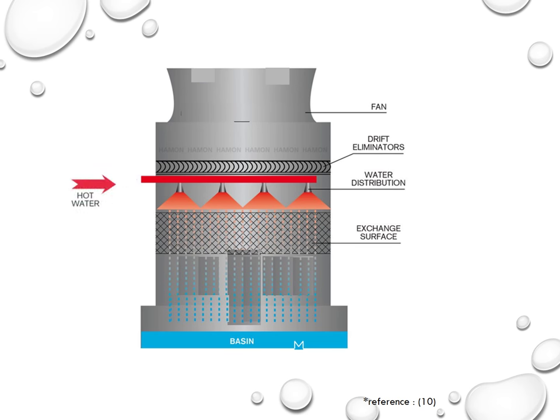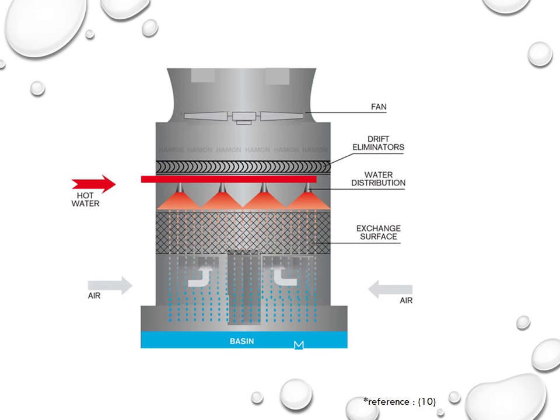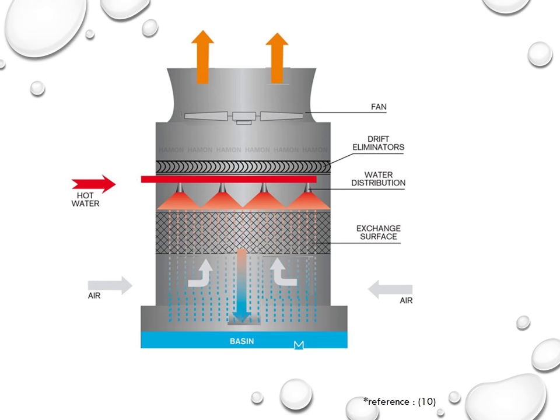Now let us discuss the operation of the cooling tower. The basic operation of an induced draft counter flow cooling tower is very simple. Hot water is distributed evenly by nozzles over the fill media. Air is pulled over the fill area with the help of a fan placed over it. This process results in exposing hot water to the air stream, cooling it by evaporation and sensible cooling. The cold water is then accumulated at the water basin and again used for recirculation.